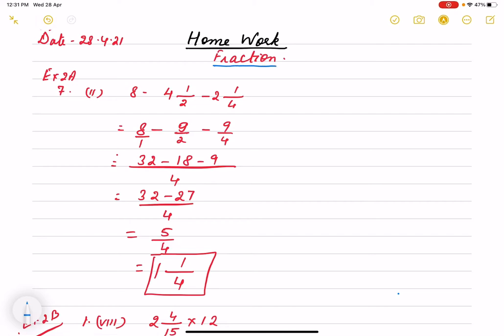Second, last is homework. Exercise 2A, R.S. Atwal book. Question was simplification. Question number 7, second one: 8 minus 4 1/2 minus 2 1/4. So first we change mixed fraction into improper fraction: 8, we can write 8 by 1, minus 9 by 2, minus 9 by 4.